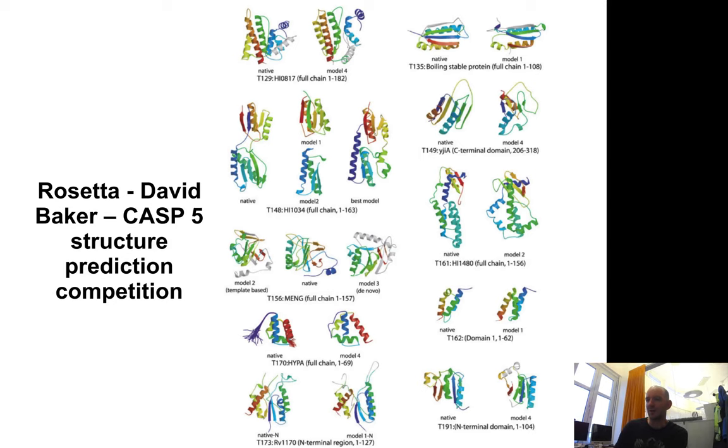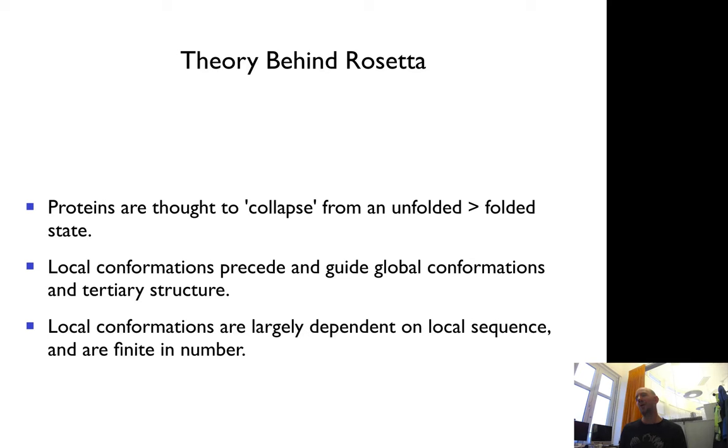The whole idea of Rosetta is that you can divide the problem of protein folding into two problems: a local problem and a global problem. The local conformations are largely dependent on the local sequence, and this is a finite number of conformations. The obvious ones are sheets and helices, but there are other types and it's not obvious that the same sequence is always in helices. Given local sequence, you have only a small limited set of possible conformations. The global problem is basically hydrophobicity - you want to optimize hydrophobicity, avoid overlap, and preserve secondary structure.